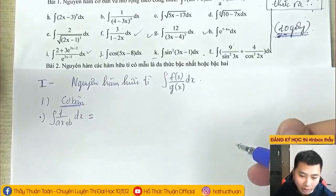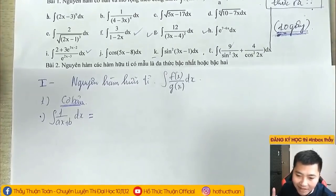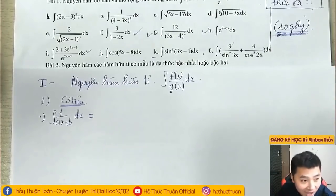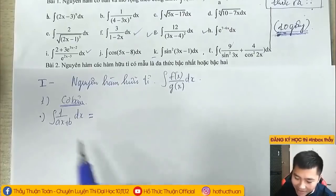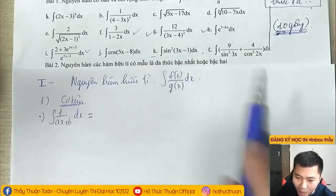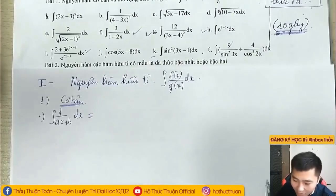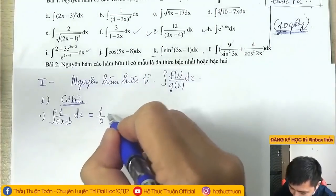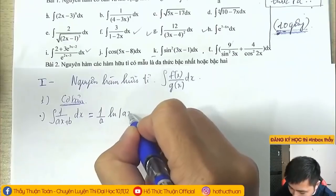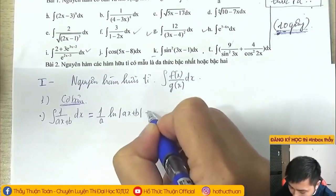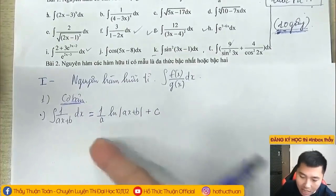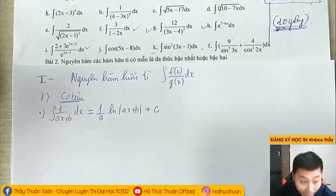Dạng thứ nhất của chúng ta: nguyên hàm của 1/(ax+b) dx. Thằng này thuộc một trong 8 hằng thức đáng nhớ mà thầy Thuận đã dạy các bạn rồi, đúng không? Có công thức rồi. Khi gặp dạng này thì các em ốp công thức ngay và luôn vào. Nó sẽ bằng (1/a) nhân ln|ax+b|, kết quả luôn luôn cộng với C. Người ta gọi là họ nguyên hàm.